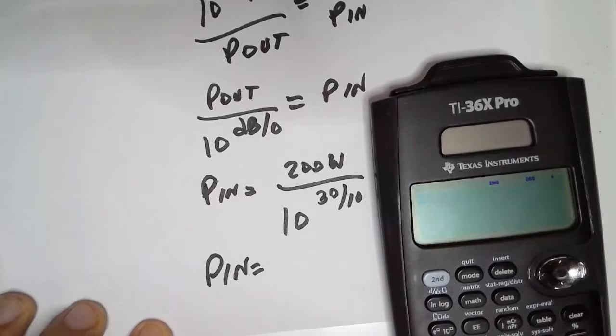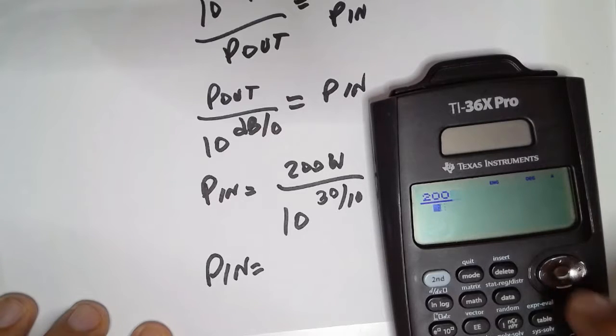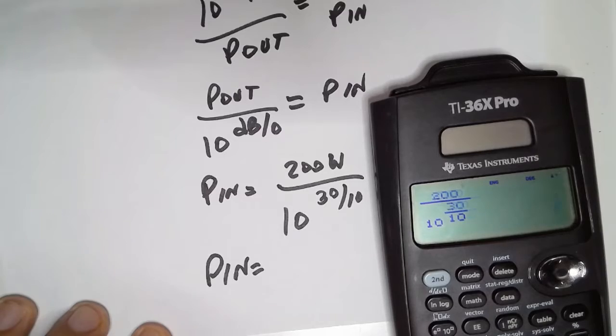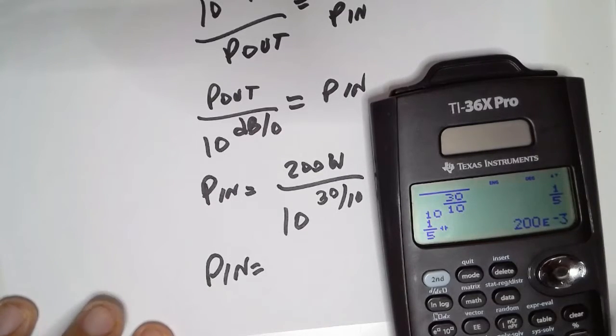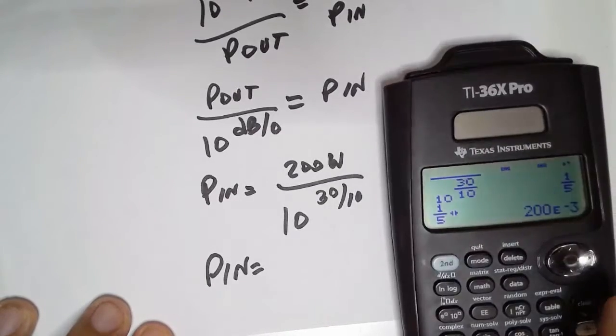So we have 200 watts over 10 raised to 30 over 10, and that's 200 milliwatts.